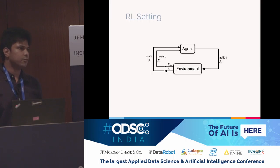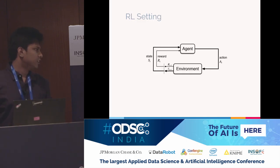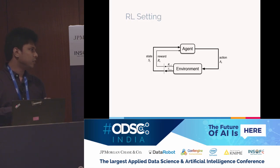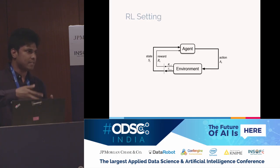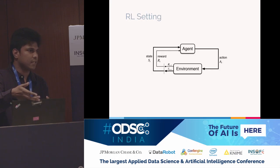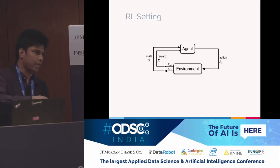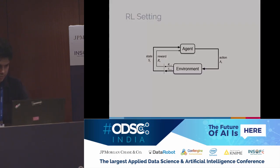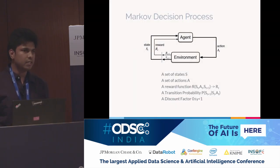Now I'll briefly introduce the reinforcement learning setting — this is one slide you'll keep seeing in RL talks. You have an agent dynamically interacting with an environment. By an agent I mean an entity with the capacity to show intelligent behavior. It interacts with and influences the environment, and every time it does, the environment gives it feedback on how it is performing. The goal of the agent is to take those actions that maximize its long-term rewards. Formally, reinforcement learning is modeled as a Markov decision process — a mathematical framework for sequential decision making.